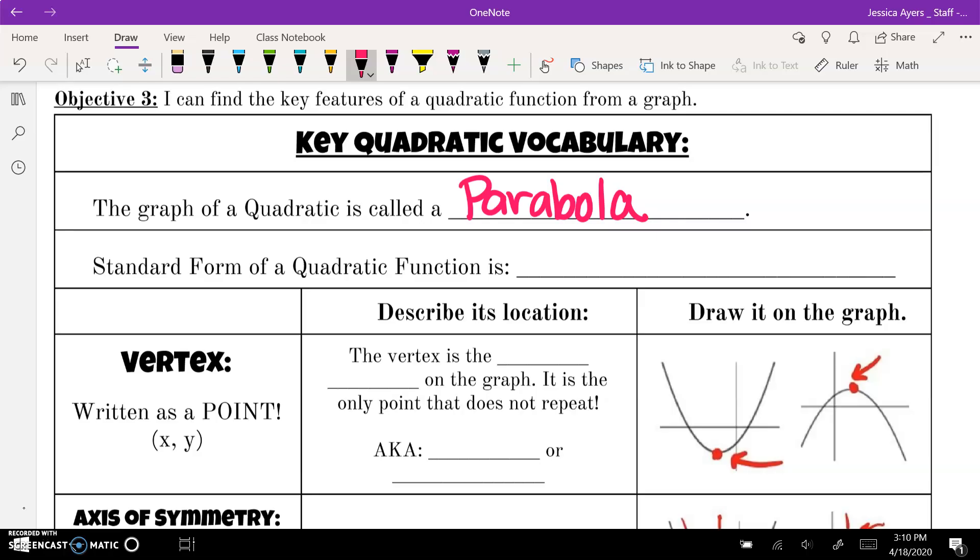So it's that U shape. A standard form of a quadratic function is going to be f(x) equals ax squared plus bx plus c. A has to be a number that is not equal to zero. Because if it were equal to zero, the x squared term would go away, thus making it no longer quadratic. So it has to have that a term. b and c can be there or not, but a is very important.